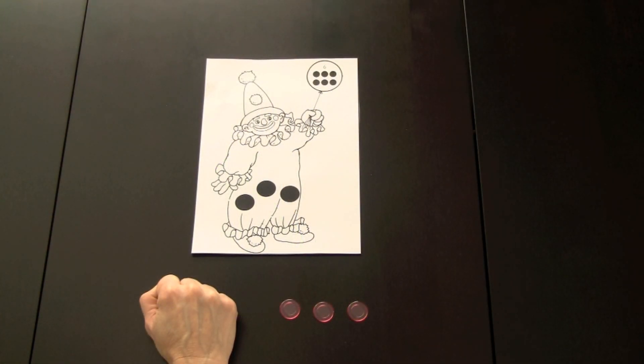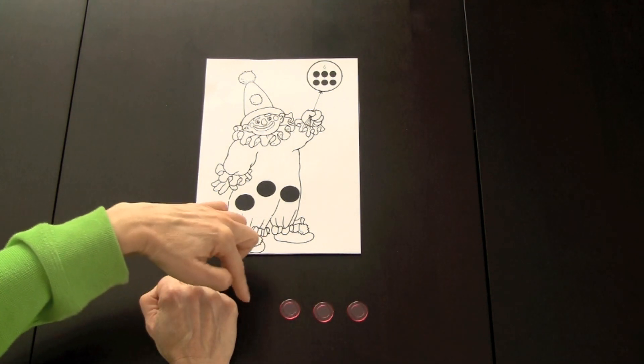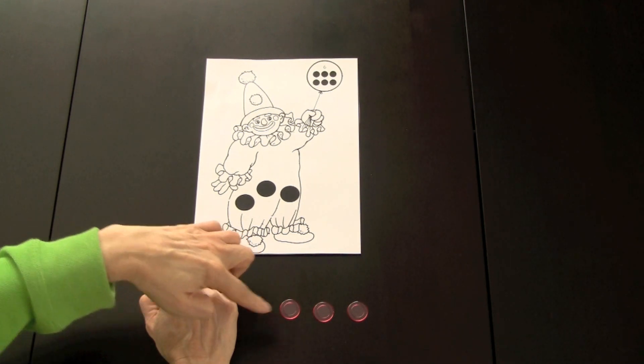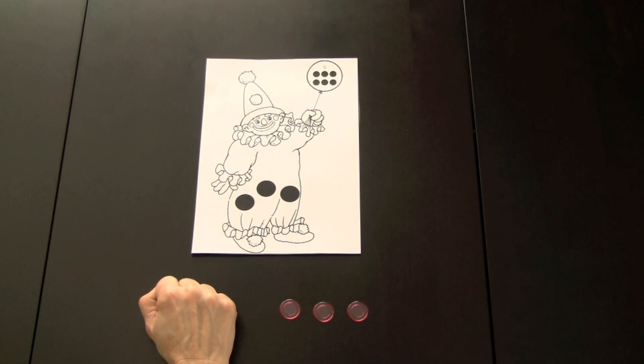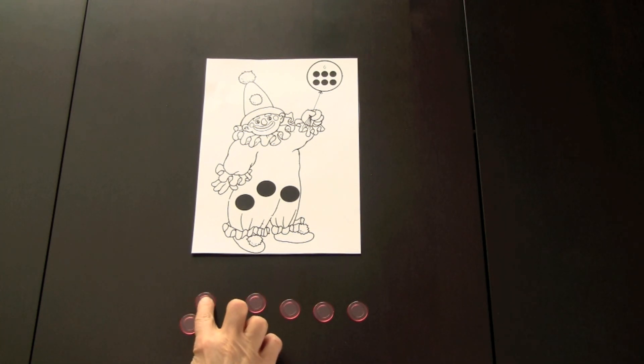You would begin by telling the children that you have six bingo chips. They can see that there are three here. They have to figure out how many are hiding behind your hand. You can tell the children how they can count one, two, three, four, five, six, and they can figure out that there must be three hiding behind their hand. After, you would show the children and they would have to see if their predictions were correct.